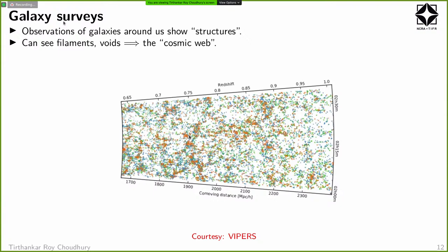In galaxy surveys, each point is a galaxy, and you can see there are places with more galaxies and then there are voids — things like filaments or walls. This structure is popularly known as the cosmic web, and it sets the large-scale structure of the universe as we see it today. The origin of this large-scale structure is essentially the small fluctuations we see in the CMB, which grow because of gravity.